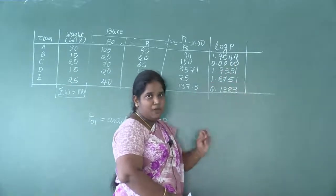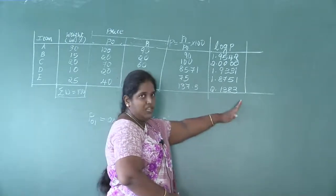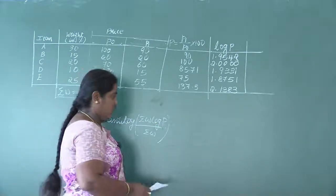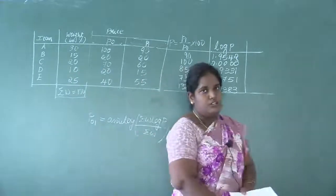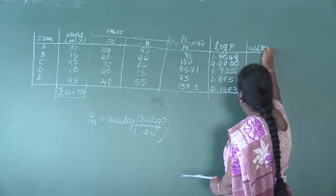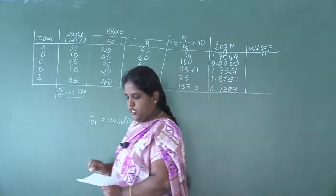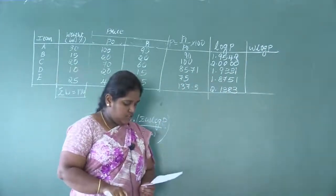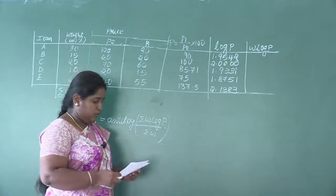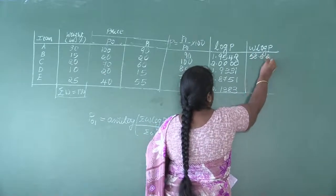Note: when using logarithm tables, the last digit may vary slightly. Using a scientific calculator is also fine — your final answer will not change. Now multiply W and log P. The first W value is 30, so 30 × 1.9542 = 58.626.